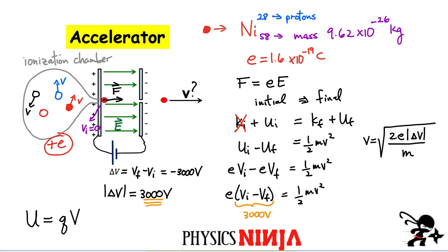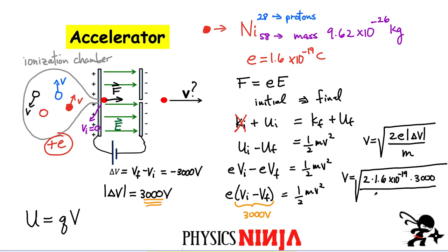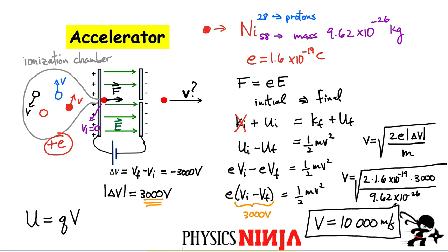We can now calculate the speed of the outgoing nickel-58 atom with one electron removed. Substituting: mass of nickel-58 is 9.62 × 10⁻²⁶ kg; plugging in 2 × 1.6 × 10⁻¹⁹ × 3,000 divided by 9.62 × 10⁻²⁶, the speed of the outgoing charge is approximately 10,000 meters per second. That's pretty fast — that completes the accelerator stage.